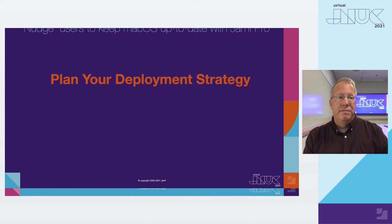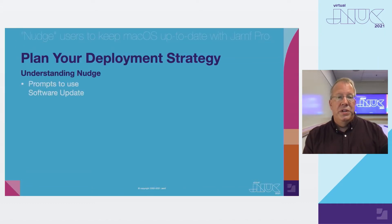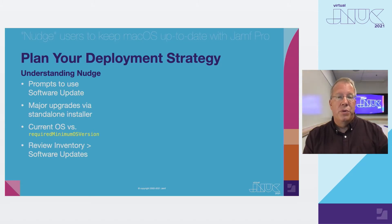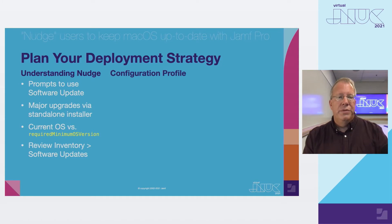Let's plan your deployment strategy. Ensure you understand what Nudge is and what Nudge is not. Nudge merely prompts users to install updates via Apple-approved methods — the Software Update system preference pane. Major application upgrades are achieved via a standalone installer, for example, Install macOS Monterey.app. While Nudge will compare a Mac's currently installed version of macOS to the value of required minimum OS version, before deploying Nudge, if you're delaying software updates, review the computer's inventory software updates to ensure the version users are being prompted to install is available. Carefully review Nudge's preferences and determine if deploying a configuration profile or JSON will best meet your needs. A configuration profile can be created using a Jamf Pro JSON schema for Nudge, making it possible for Jamf Pro administrators to change values via the Jamf Pro GUI.